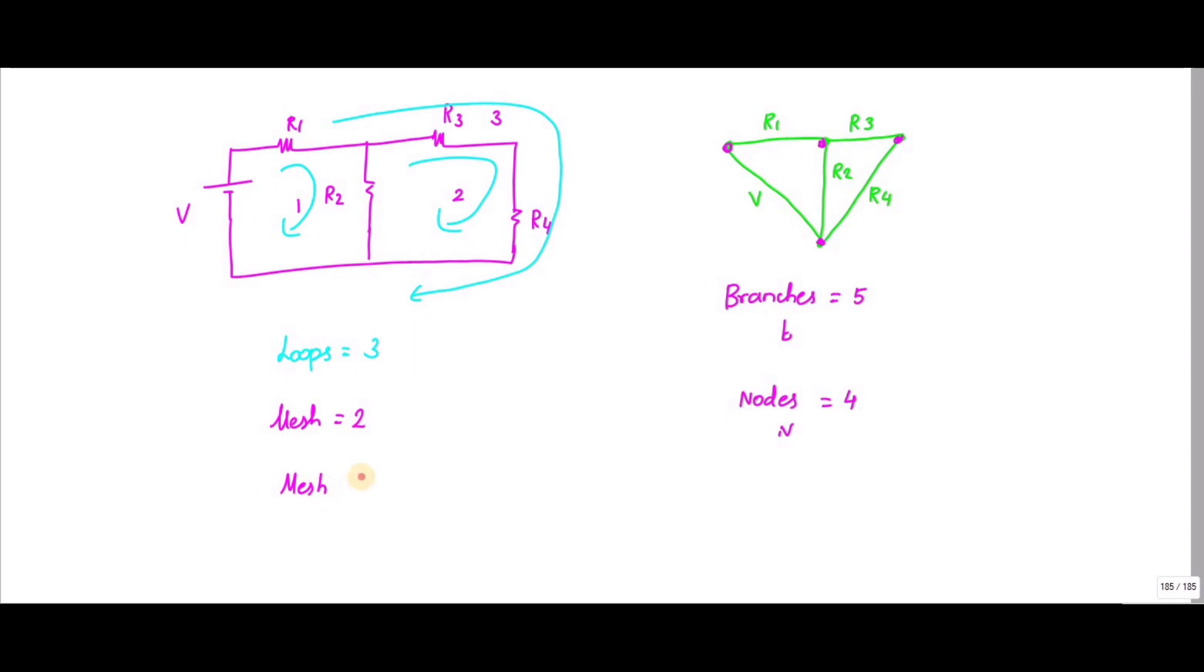You know the formula for mesh: the equation E is equal to B minus N minus 1. So what is B? B is 5 minus 4 minus 1, that is 5 minus 3, that is equal to 2. So the number of meshes is equal to 2, and I can form two equations based on the values of the circuit. I can assign the current in either direction, either clockwise or anticlockwise. So I can assign this one as I1 current and this one as I2 current.